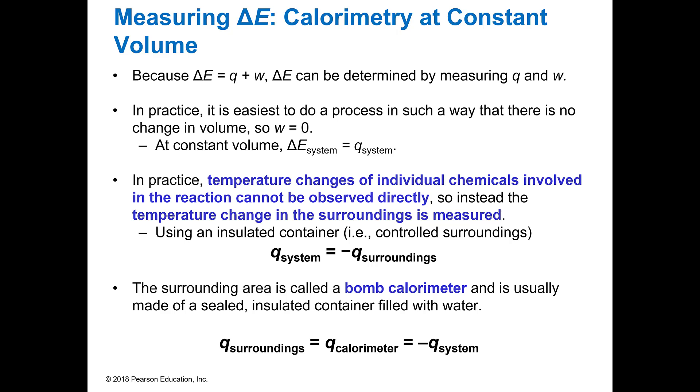Because the change in energy is Q plus W, we can look at that change in energy by measuring the heat and the work. So it's not the easiest thing to do when you're just looking at how much energy is there. What a lot of times we do is we look at the change in the heat. As long as there's no change in volume, the temperature change of the individual chemicals in the reaction can't be seen directly, but we can see what happens to the temperature. Does it increase and give off heat or does it go down and absorb heat? One of the ways that we do that is by using an insulated container called a bomb calorimeter.